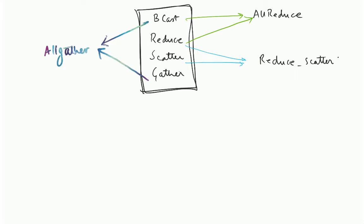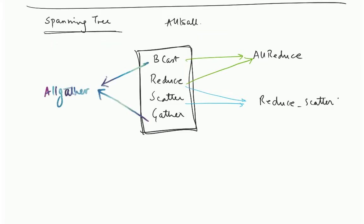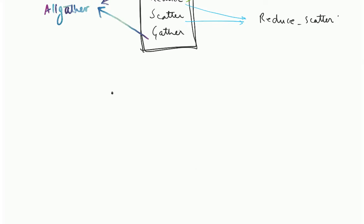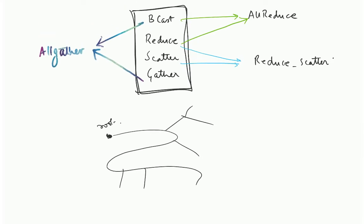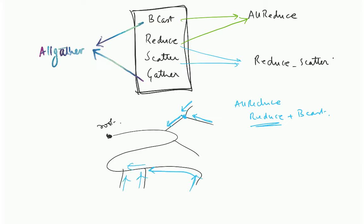You can implement these quite efficiently — these are called spanning tree algorithms. Typically, you build a spanning tree with a designated root. To implement all-reduce as reduce plus broadcast, first consider the reduce: the leaves send the data up, each parent forwards the data upward, and so on all the way to the root. The direction of communication is from the leaves upward to the root.